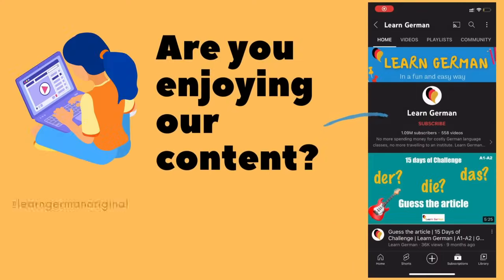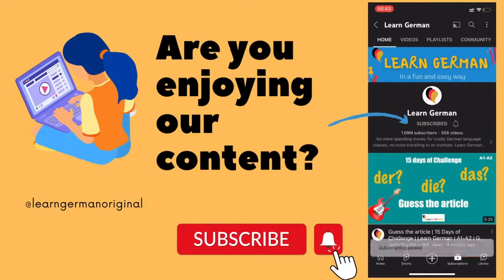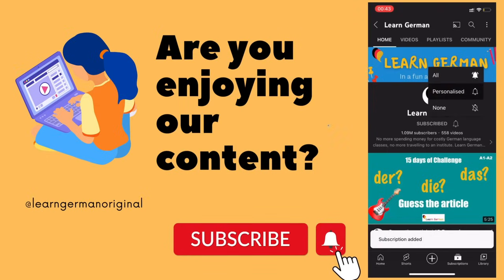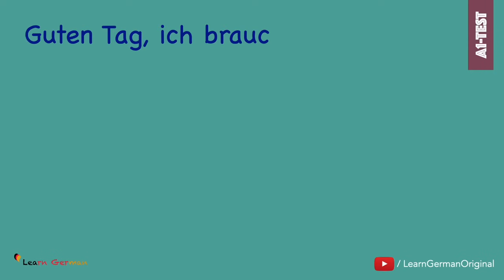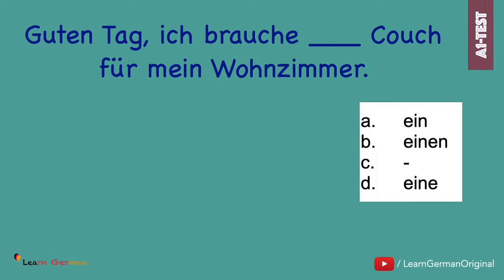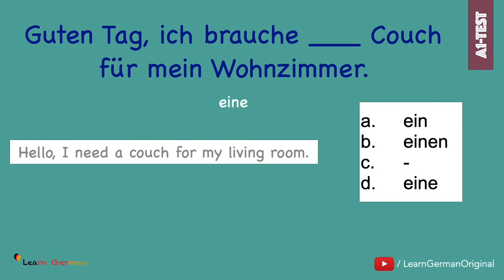Are you enjoying our video and the content? Don't forget to subscribe to our channel and enjoy more videos. Let's look at the next one. Guten Tag. Ich brauche... Couch für mein Wohnzimmer. Since the article for Couch is die, you would use the indefinite article eine. Guten Tag. Ich brauche eine Couch für mein Wohnzimmer.